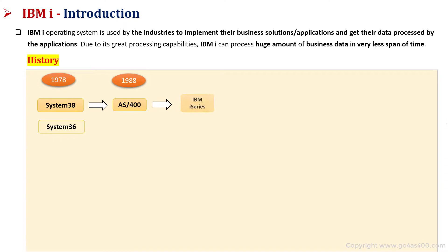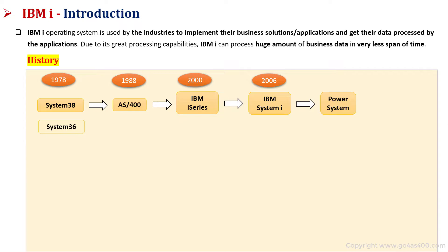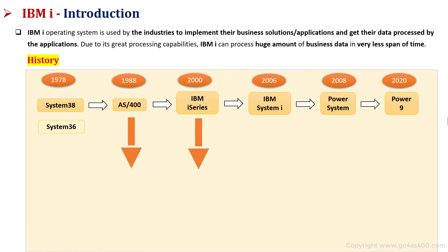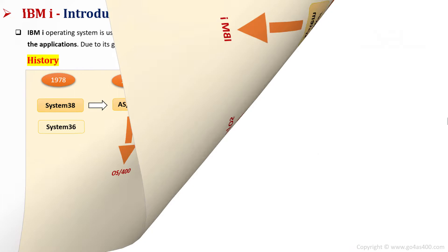With the evolution in architecture, AS400 was rebranded to i-Series in 2000, and then it became IBM System i in 2006. IBM System i was further replaced by IBM Power System Architecture in April 2008, and then finally it became Power 9 in 2020. The operating system also got renamed with the rebranding — initially it was OS400, then it became i5OS, and finally it became IBM i. IBM i 7.4 is the latest operating system version.